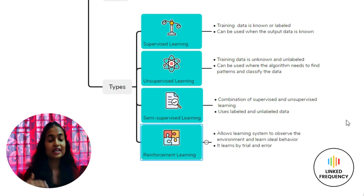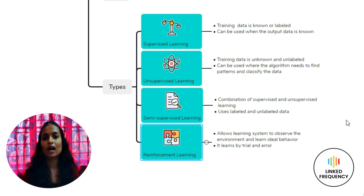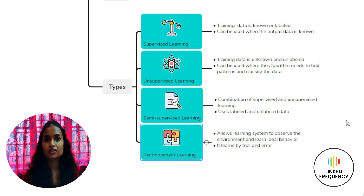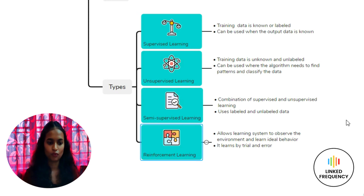The fourth type is Reinforcement Learning, the next higher level of machine learning. Here the system is allowed to interact with the environment, observe every tiny detail, and then take an ideal decision and reach a conclusion based on inputs from the environment. The system makes decisions on a trial-and-error basis. The learning machine observes details of the environment, and whenever a similar situation occurs again it reacts in a similar format. This learning is a very iterative process.